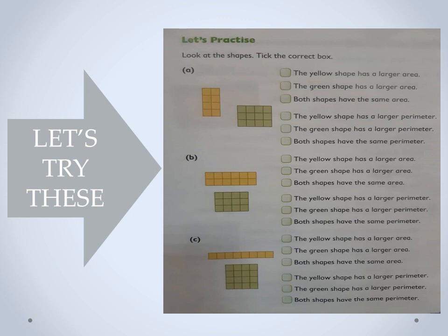Let's add everything together: two plus four plus two plus four equals twelve. The answer is in centimeters only — not square centimeters — because we are measuring perimeter. So the perimeter of the yellow is twelve centimeters. For the green shape: three plus three plus four plus four — that's six plus eight — is fourteen centimeters.